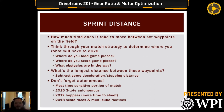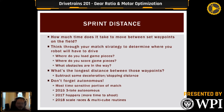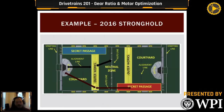In 2018 Power Up, getting to the scale first was the most obvious example of how a sprint can matter — it was a time-based scoring objective. Getting it tilted toward your team scored points earlier and screwed up the other team's routine by having it elevated when they arrived. It also gave you more time to score multiple game pieces. As more teams try to score preloads and add game pieces in autonomous, these autonomous sprints are becoming increasingly important to design around.